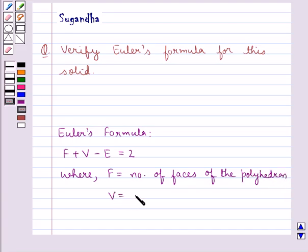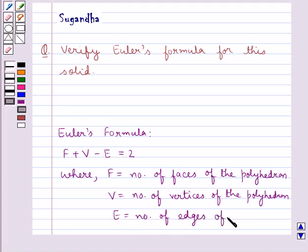V is the number of vertices of the polyhedron, and E is the number of edges of the polyhedron. This is taken as the key idea for this question.